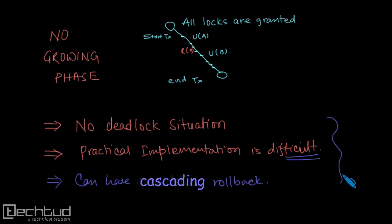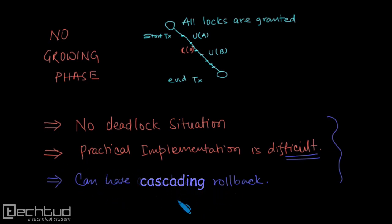In the next lecture we will study strict 2PL to avoid cascading rollback. See you in the next lecture. If you have any doubts, please go to tech2.com and ask — we will be happy to answer. Thanks for watching.